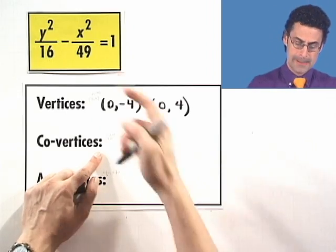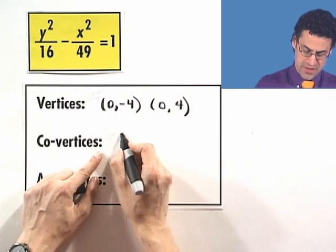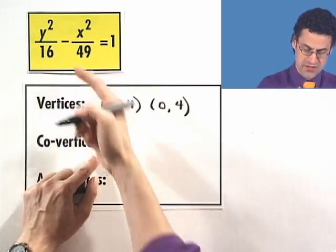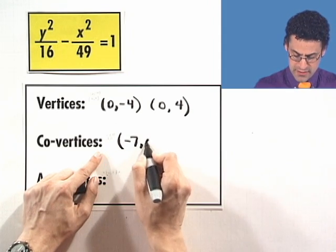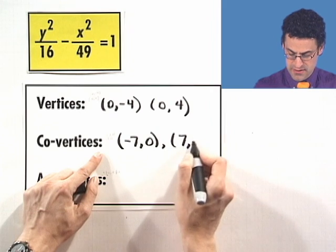The covertices, they're going to be the values on the x-axis where I get the square root of 49, which is going to be negative 7, 0 and 7, 0.